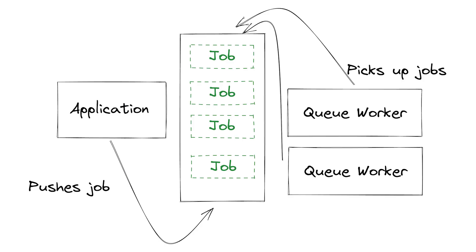A queue usually works like this: you put something into a queue — we're going to call it a job. Then you have a worker, which may be an entirely separate app, but it also may be the same app running in another process, that comes and picks the job up and processes it asynchronously. You have an application pushing a job to a queue — that queue is basically a storage device, it could be Redis, it could be MySQL, it could be a file. Another application, which might actually be the same application running in a different process — like Laravel or Rails with Sidekiq — comes and picks those jobs up.